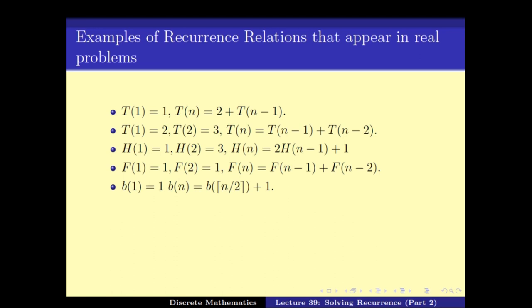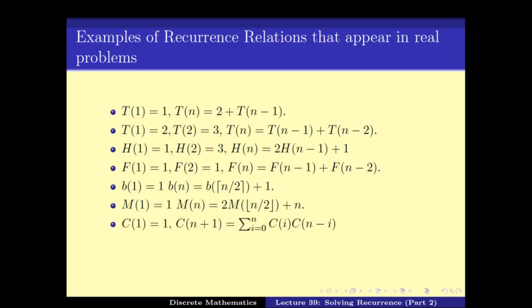There is also the one from the merge sort algorithm: m1 = 1 and mn = 2·m(n/2) + n. And one from the Catalan number: c1 = 1 and c(n+1) = summation i = 0 to n. These are some of the recurrence relations that appear in real life — a very small sample of them.